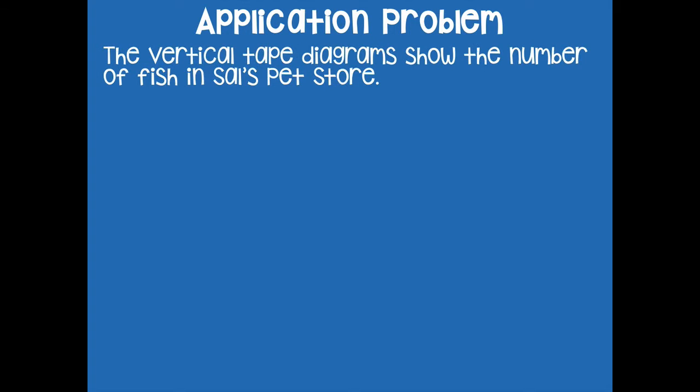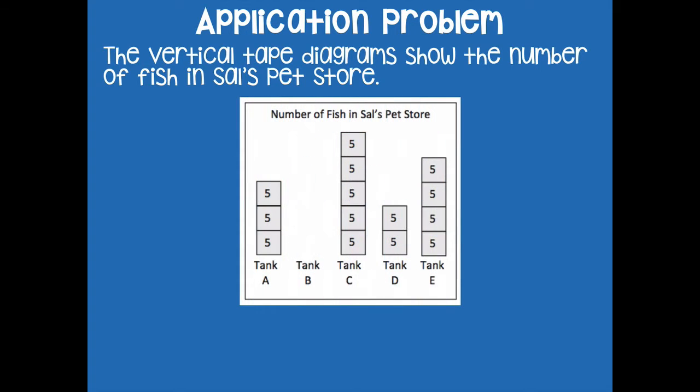We're going to start with our application problem that will lead right into the problem we work with for the entire lesson today. It says the vertical tape diagrams show the number of fish in Sal's pet store. This is just like what we did in the previous lesson. Here are our vertical tape diagrams — we have different tanks and each unit is five.